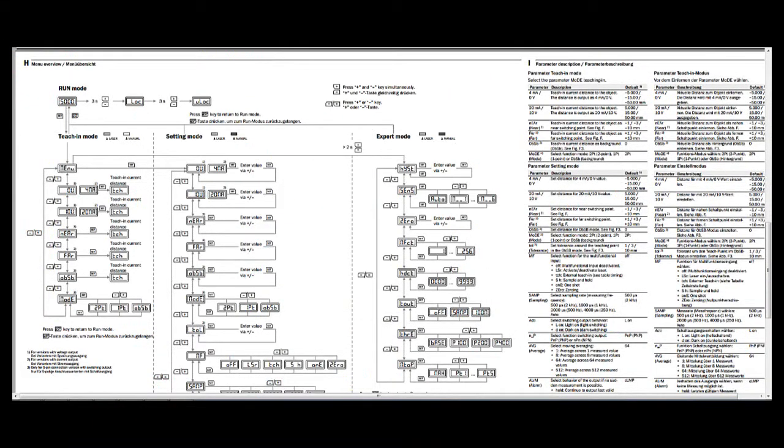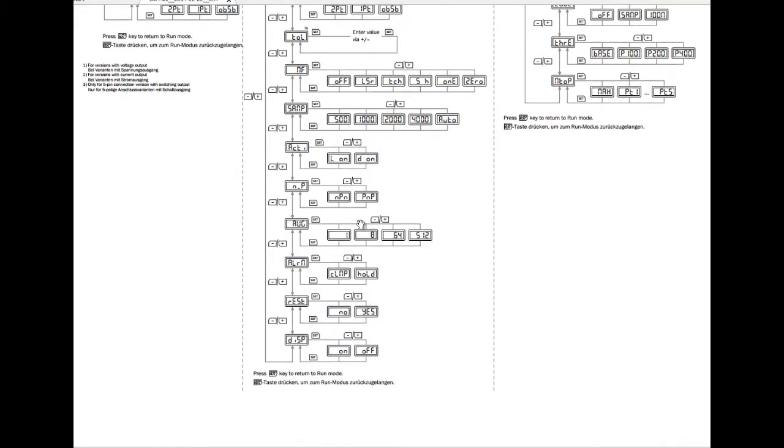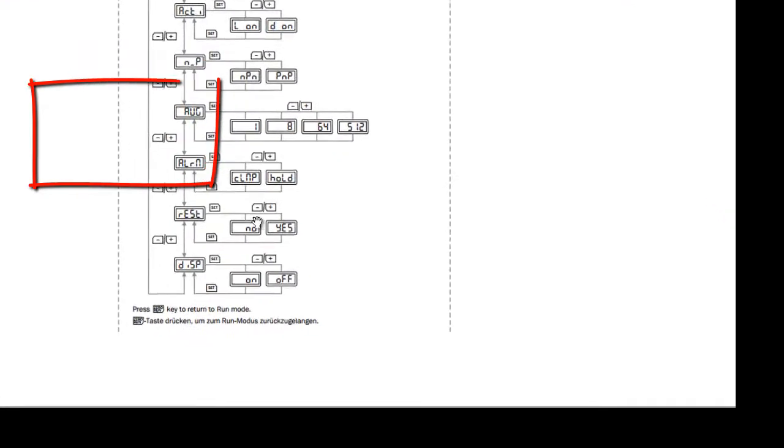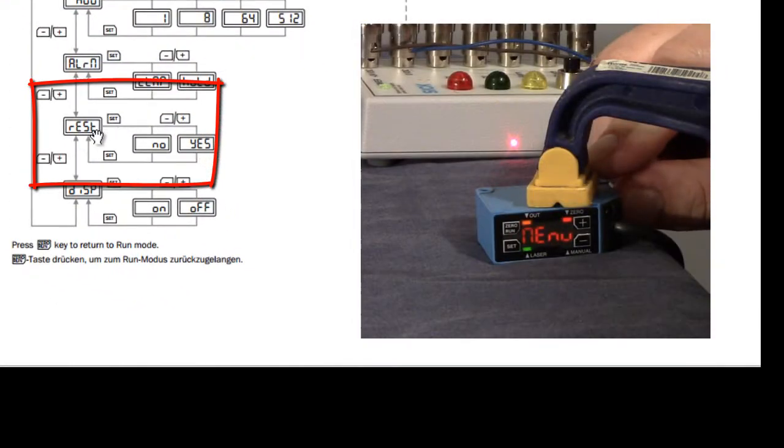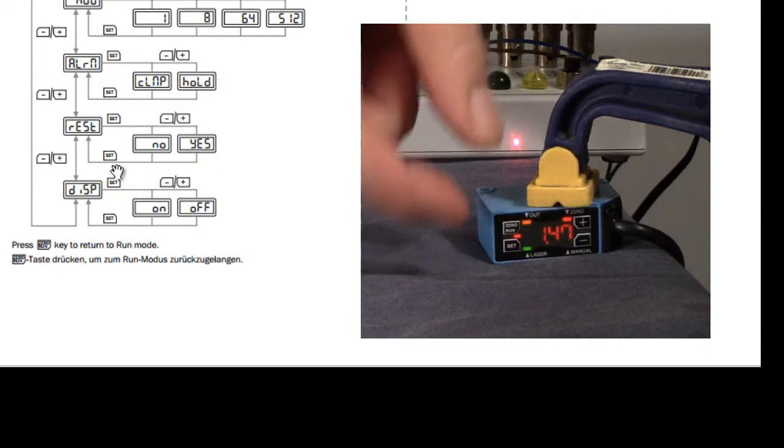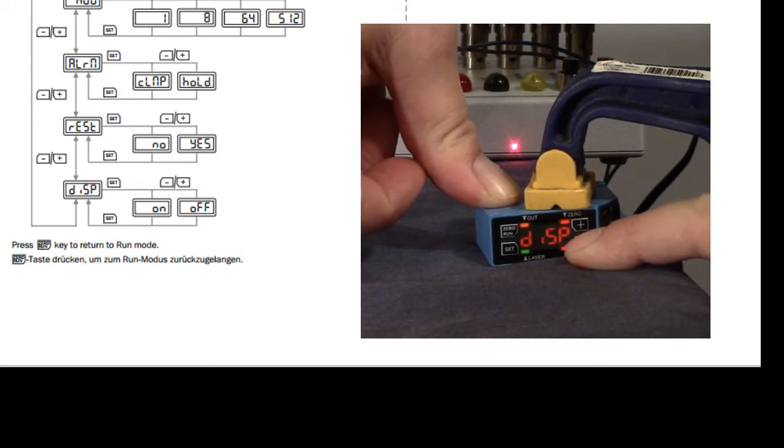One of the first things we should do is reset the sensor back to factory defaults. So we know where we're starting from and so we can move forward in a normal manner. To do that, you can see on the second page of the insert under the run mode. This is more of an advanced setting. And then at the bottom, we have reset, R-E-S-T. So we're actually going to do that first. Go into R-E-S-T, hit set, change it to yes, hit set again. And then we can hold the run button to get back to normal run mode.